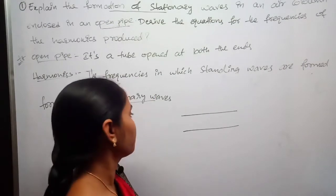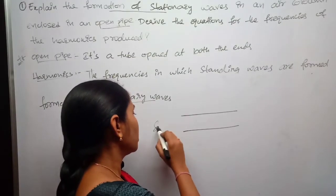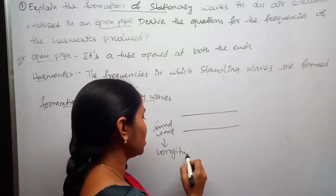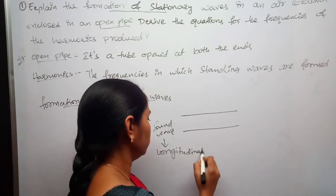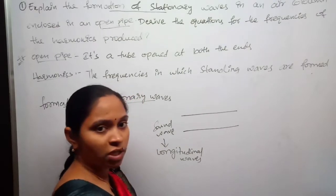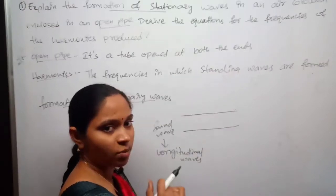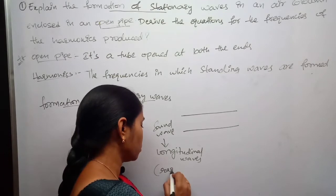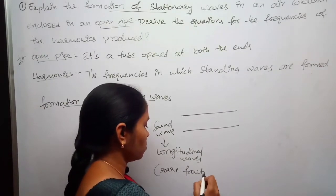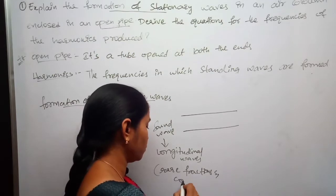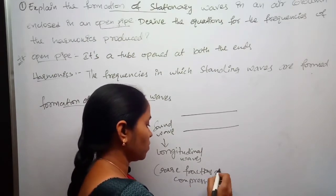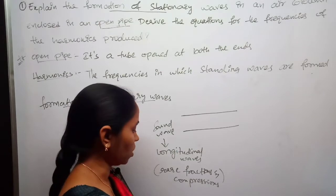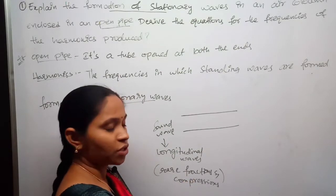Now I produce a sound wave inside the pipe. This sound wave is a longitudinal wave. The difference between longitudinal waves and transverse waves is already explained in our previous lectures. Longitudinal waves are formed due to rarefactions and compressions, and these rarefactions and compressions result from a pressure difference between the air molecules.